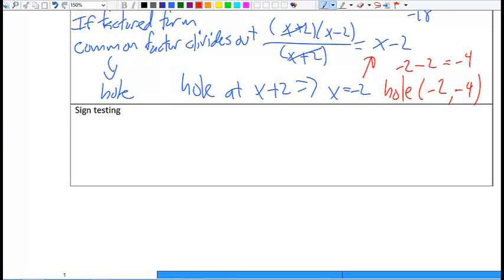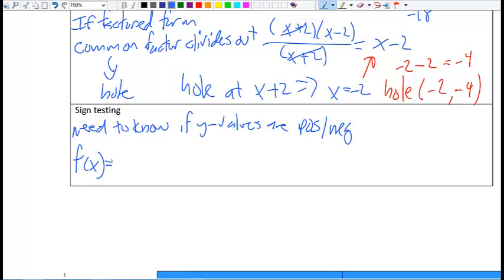The very last sort of skill I want to run through with you is sign testing. Now, let me just take a second. So we do sign testing if we need to know if the y values are positive or negative. And this happens a lot in calculus. It's happened when we looked at domains of square roots. Sign testing is a great skill. But we only really use it if I'm just trying to figure out positive or negative y values. And sometimes that's all I really need to know.